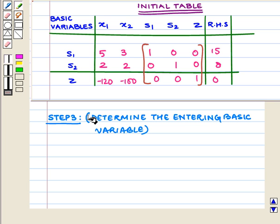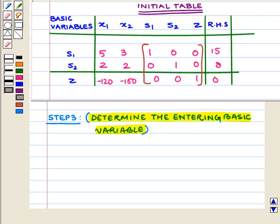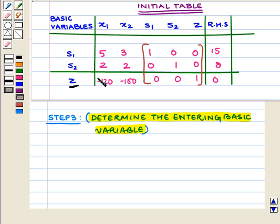Our next step is to determine the entering basic variable. To select it, we look at all numbers in the bottom row — where z is written — excluding the RHS column. We have minus 120, minus 100, 0, 0, and 1. Since minus 120 is the most negative, x1 is the entering variable.